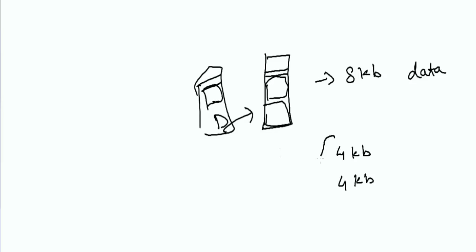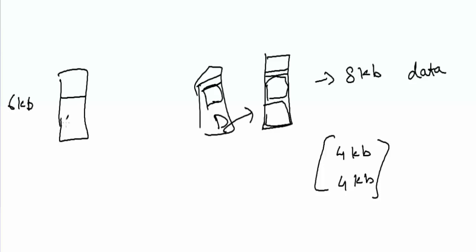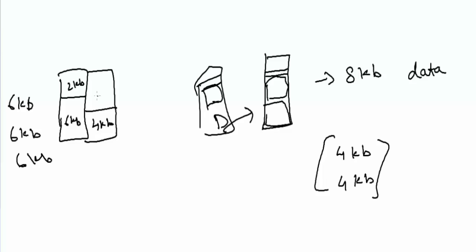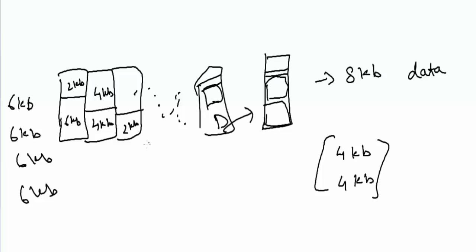What happens when a bigger row comes in, like 6 KB? The 6 KB fills part of one block, and for the next 6 KB row, 2 KB will be placed in that block and the remaining 4 KB in the next block — and that's how it continues. Again when a 6 KB row comes in, 4 KB goes to the current block and 2 KB is allocated in the next data block. What if the data is above 8 KB? The same way — if data is 10 KB, it allocates one block for 8 KB and utilizes 2 KB from another block.